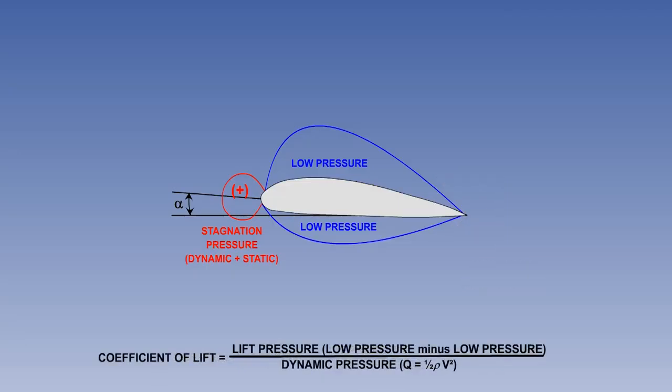By this definition, a lift coefficient, or CL, is the ratio between lift divided by wing platform area, or lift pressure, and dynamic pressure.